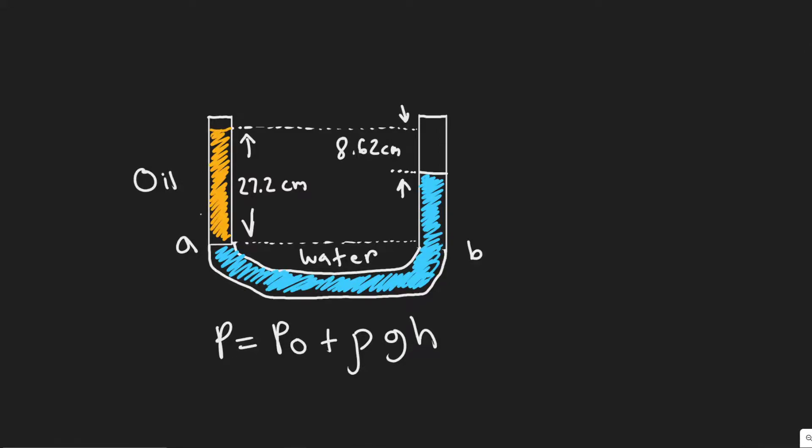Okay, so in this problem, we're told water and then oil, which don't mix, are poured into a U-shaped tube open at both ends. They come to equilibrium as shown in the figure. What is the density of the oil? Hint, pressures at point A and B are equal, and then they ask us why that is.